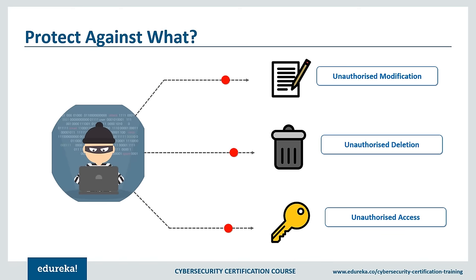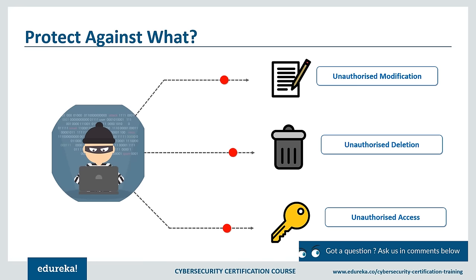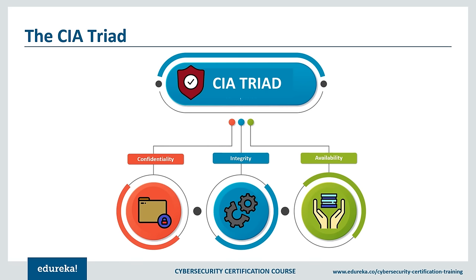For example, end-user protection defends against loss or theft while also scanning computers for malicious code. When talking about cyber security, there are three main activities we are trying to protect against: unauthorized modification, unauthorized deletion, and unauthorized access. These three terms are synonymous with the commonly known CIA Triad, which stands for Confidentiality, Integrity, and Availability.